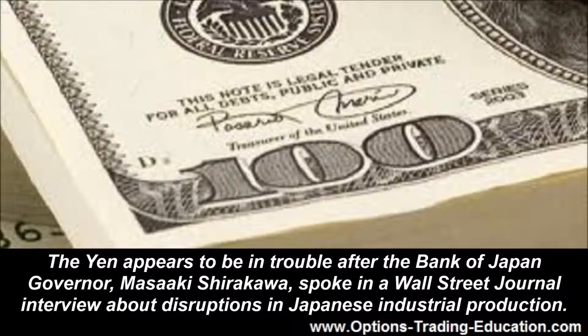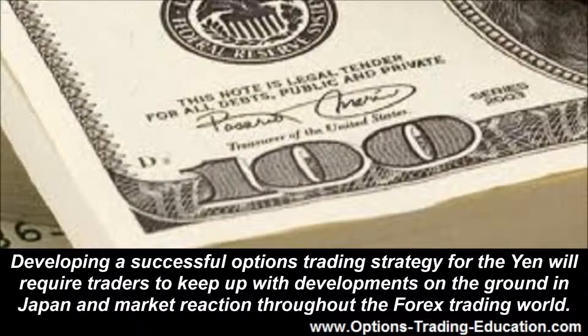The yen appears to be in trouble after Bank of Japan Governor Masaaki Shirakawa spoke in a Wall Street Journal interview about disruptions in Japanese industrial production. Developing a successful options trading strategy for the yen will require traders to keep up with developments on the ground in Japan and market reaction throughout the forex trading world.